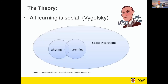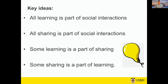Many of you will have heard of Vygotsky. His position was that all learning is social. In this Venn diagram, I've placed learning and sharing as little disks that overlap, and they're all part of social interaction. So in Vygotsky's world, all learning is social, and I've added that sharing disk as a social process, and the two disks overlap. To summarise: all learning is part of social interactions — that's Vygotsky. All sharing is part of social interactions. Some learning is part of sharing and some sharing is part of learning.